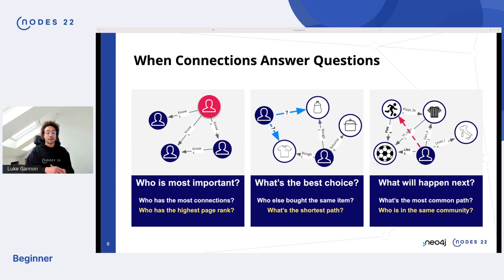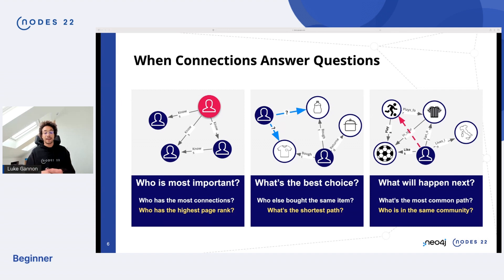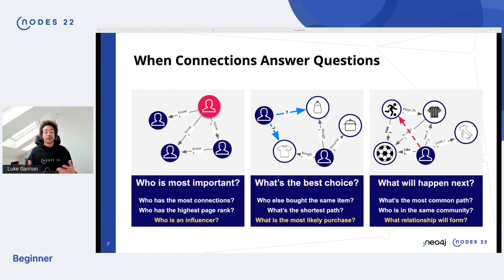In terms of importance, we can use graph algorithms like PageRank to find importance within the graph. Or if we're looking for best choices, we can use things like shortest path. Or if we're trying to predict what's happening next, we might use who's in the same community to predict with. This allows us to answer big questions like: who's an influencer within my network, what's the most likely purchase for a person, or where relationships might form in the future.